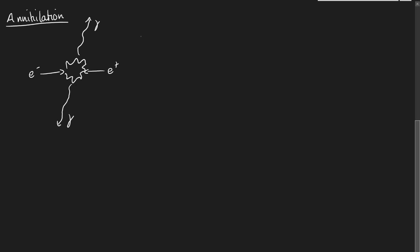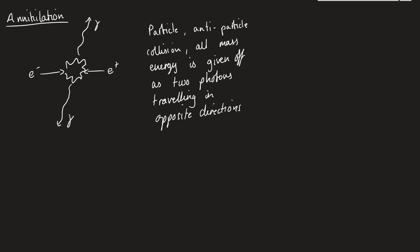So the description of annihilation is that we have a particle-antiparticle collision. And the particle-antiparticle collision, all mass energy is given off as two photons travelling in opposite directions. So this is how we would explain what annihilation is. We take a particle and an antiparticle, they collide, they give off two photons, they have to travel in opposite directions.